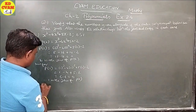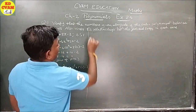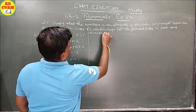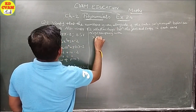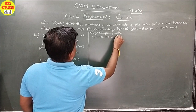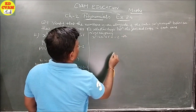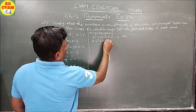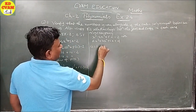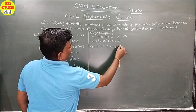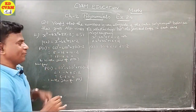Comparing x³ - 4x² + 5x - 2 with Ax³ + Bx² + Cx + D, we get: A = 1, B = -4, C = 5, D = -2. The given zeros are alpha = 2, beta = 1, gamma = 1.